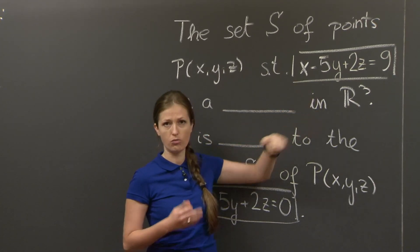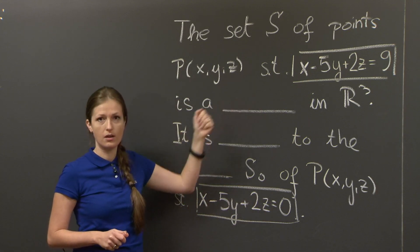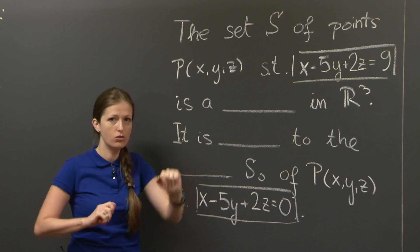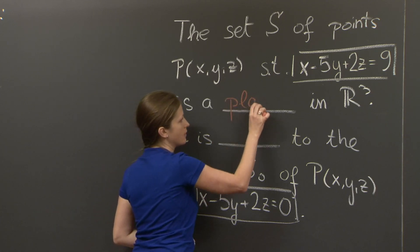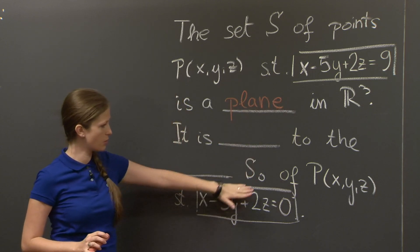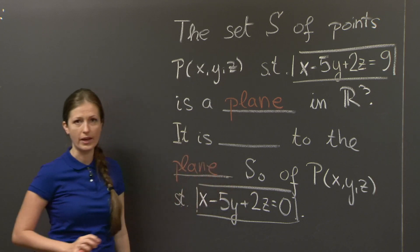If this equation is linear, rather than quadratic or cubic or exponential, this something is two dimensional and flat. Something two dimensional and flat in R³ is also called a plane or a two-plane. Similarly, S₀ is also a plane.